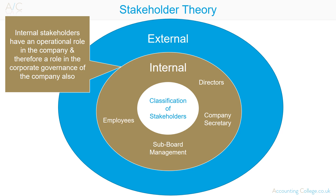Employees carry out management orders by complying with internal controls and reporting breaches. Trade unions are employee representatives who protect employee interests. They protect whistleblowers and highlight and take action against breaches in corporate governance of employees.